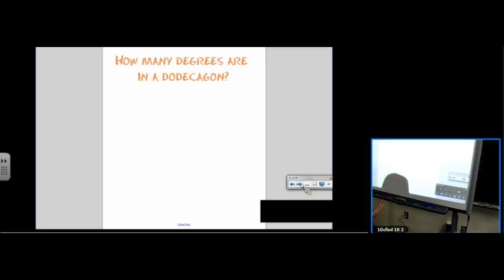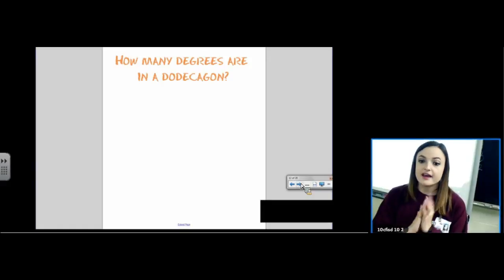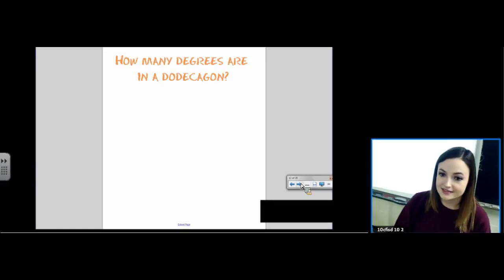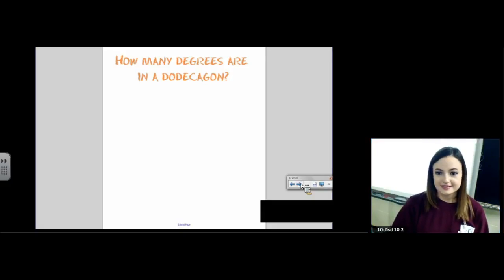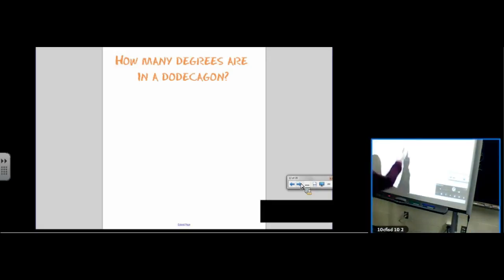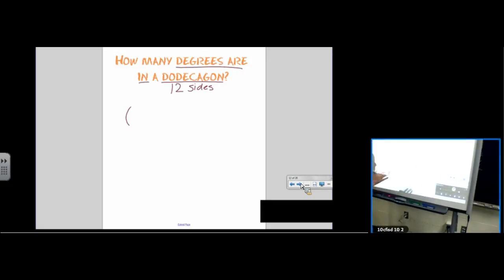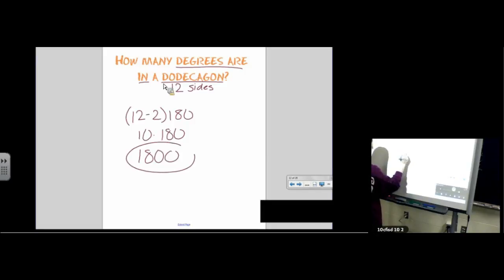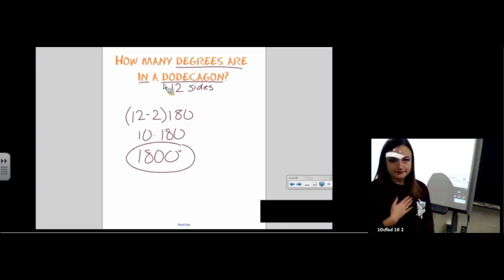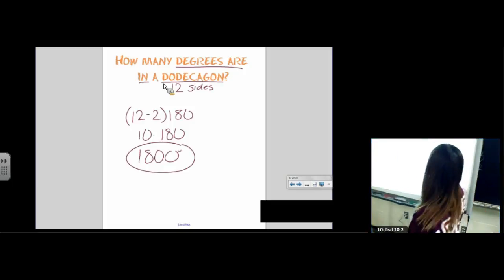How many degrees are in a dodecagon? Dodecagon was one of the shapes on your sheet. Dodecagon has 12 sides. The hardest part of this problem was remembering what a dodecagon was. Dodecagon has 12 sides. Plug that into our formula. We're looking for how many degrees are in a dodecagon. 12 minus 2 times 180. 10 times 180. That is 1,800 degrees.